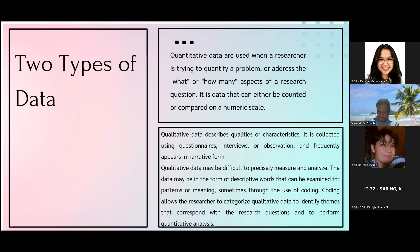The nature of data has two types, which is the quantitative and the qualitative. In quantitative data, these are used when a researcher is trying to quantify a problem or address the what or how many aspects of a research question, and it is data that can either be counted or compared on a numerical scale.